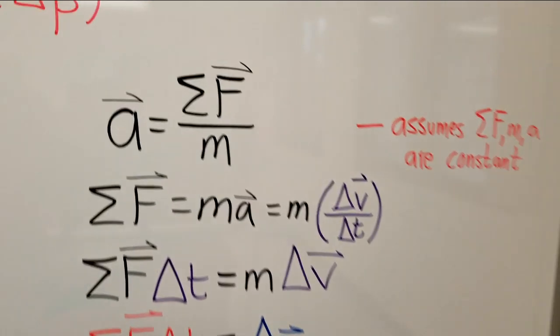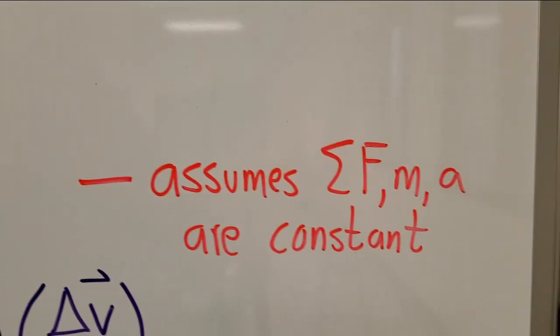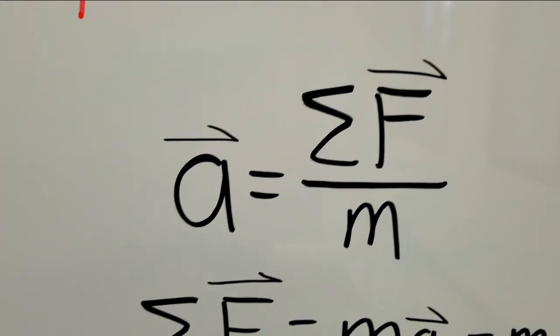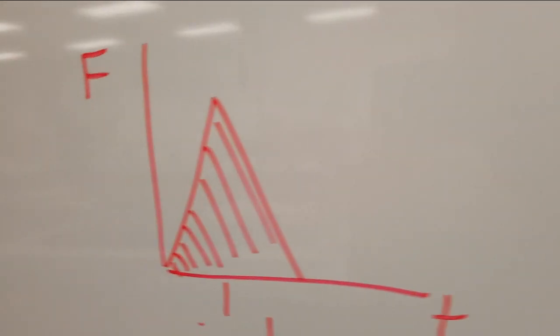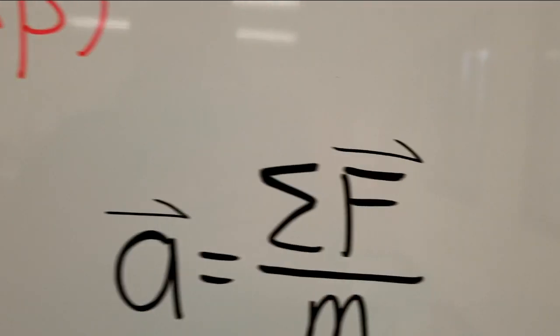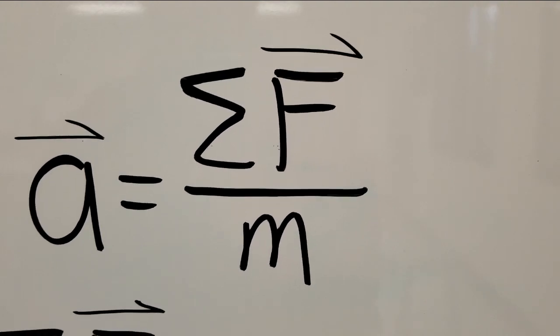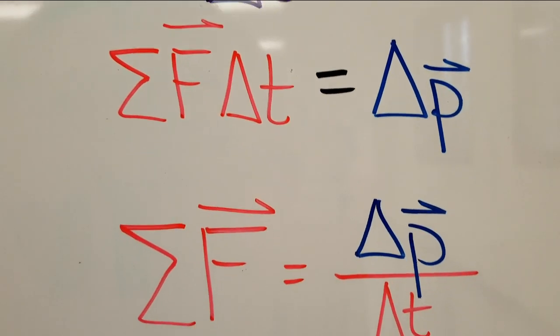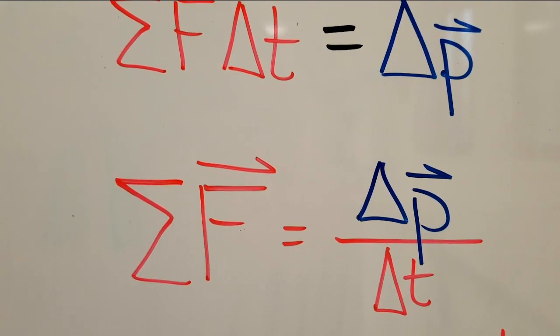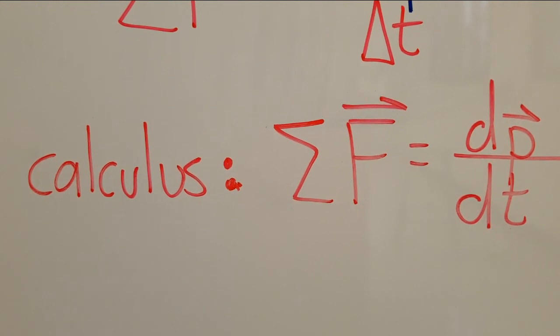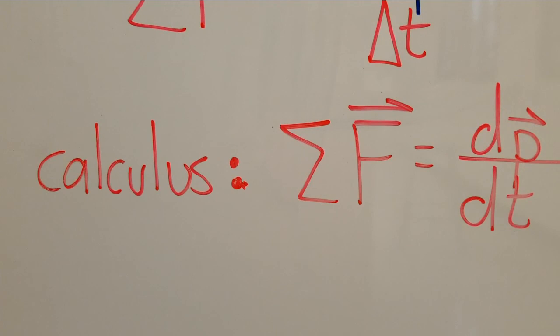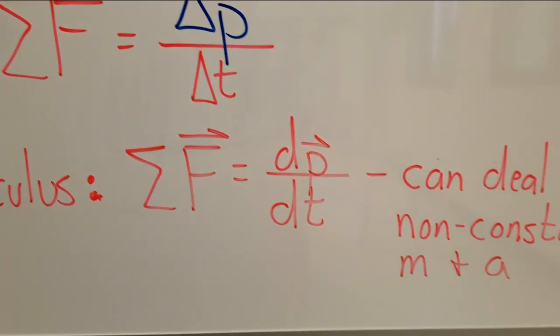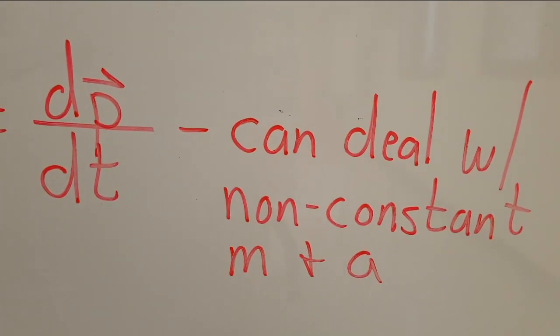The problem with this and the limitation of this is that that assumes that the net force, mass, and acceleration are all constants. Like A is a number, net force is a number, M is a number. If we're dealing with a changing force, like a graph that looks like this, then we really can't use that expression because F would be a function not a number. If we come all the way back down to here and we rewrite net force as delta P over delta t by just solving that for the net force. If we were to write that in calculus terms it would look like this. One day you may be in a calculus class and you'll learn what a derivative is and then you'll recognize that notation. Net force equals the derivative of P with respect to t. That version of Newton's second law allows us to deal with non-constant masses and accelerations.